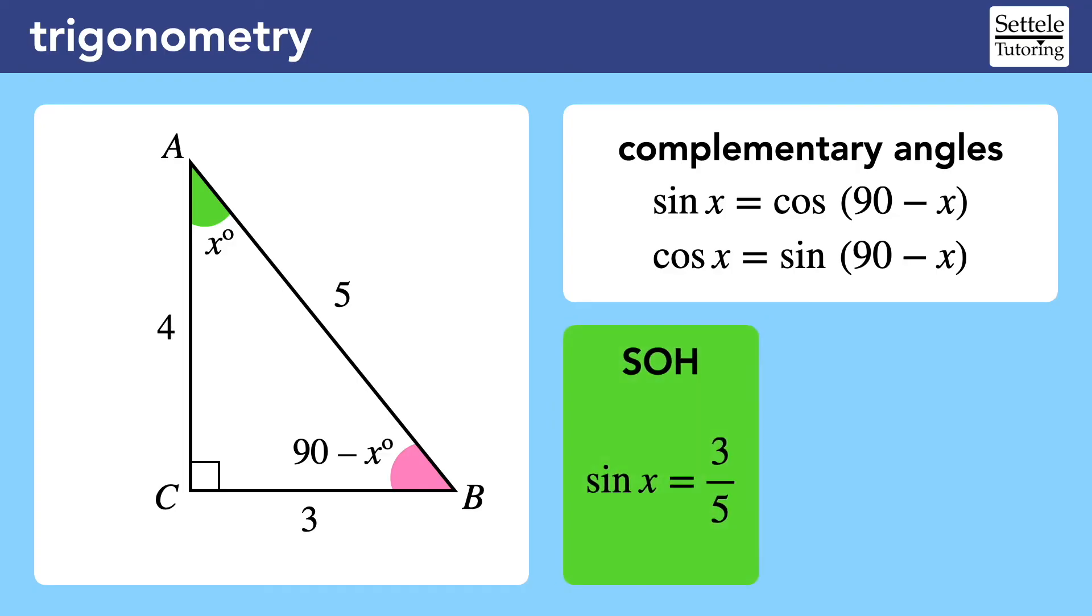Applying the formula, we can find that the sine of x is three-fifths, because the three-leg is opposite angle A, and the hypotenuse is five. The formula says this should be equal to the cosine of 90 minus x, which it is, because the adjacent side of angle B is also the three-leg, and the hypotenuse is still five. In other words, these formulas work because the opposite side for one acute angle is the adjacent side for the other acute angle.